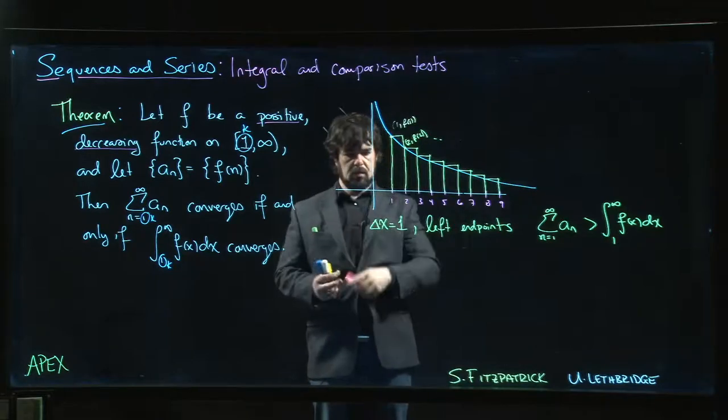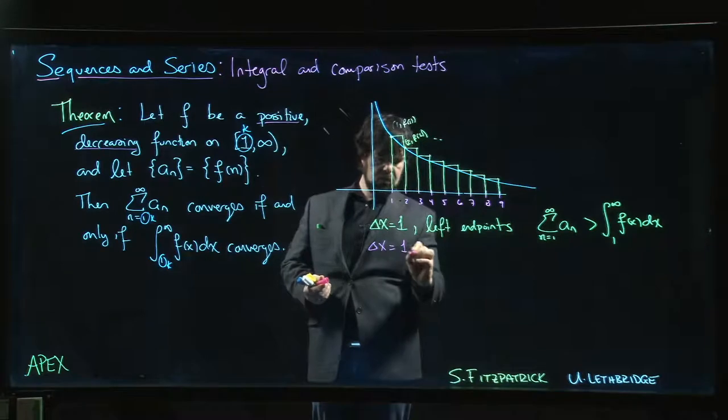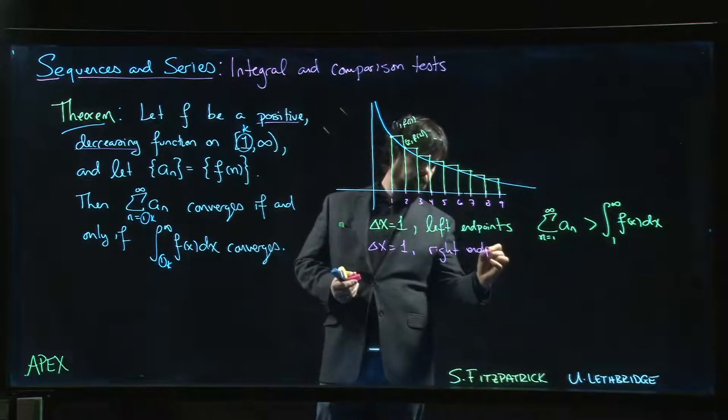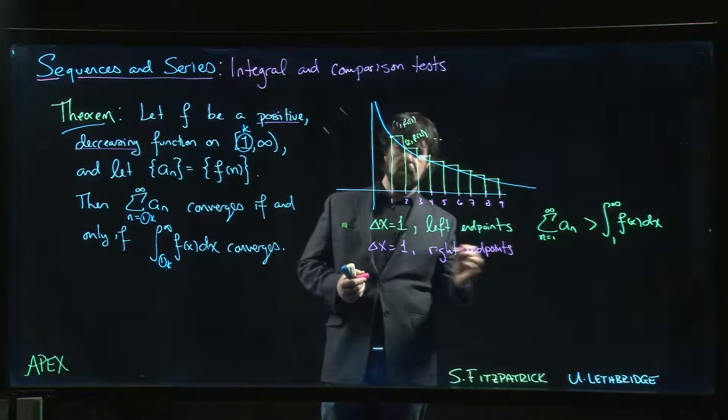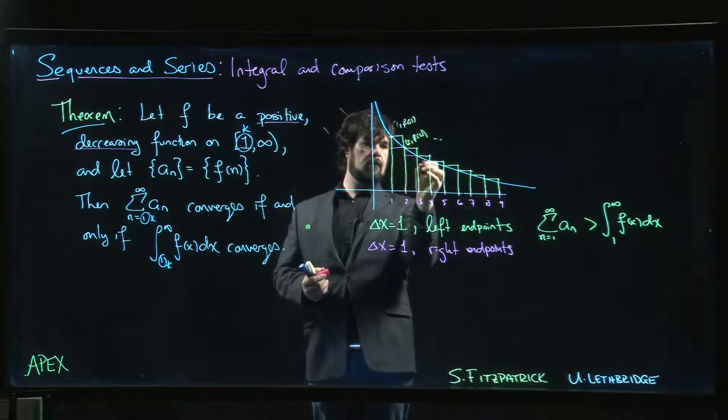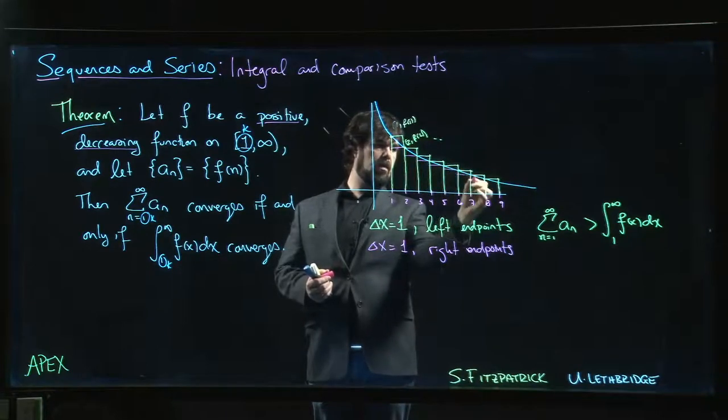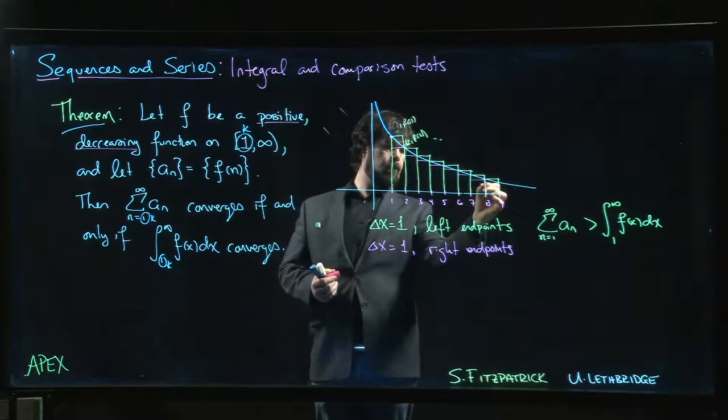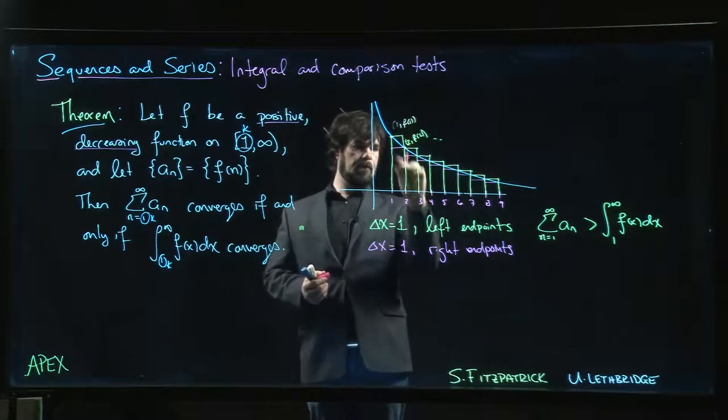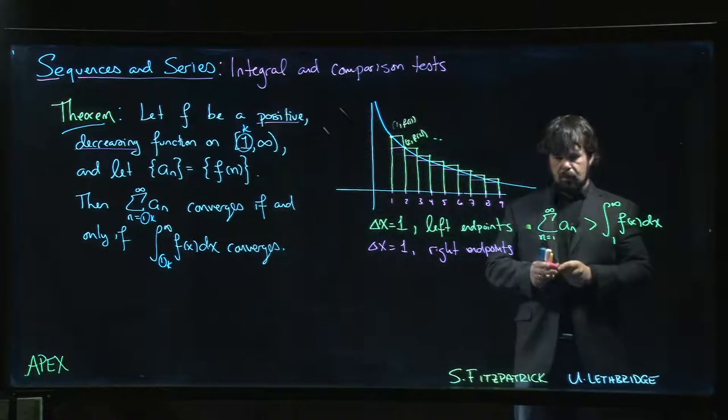But you know, you could equivalently decide that you're going to do maybe delta x equals one but you want to do right endpoints. So then we would get the underestimate. We use right endpoints, we get that.